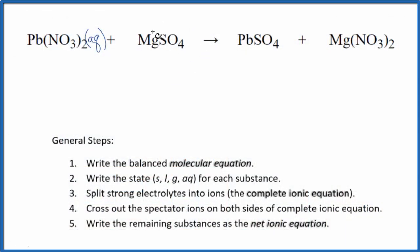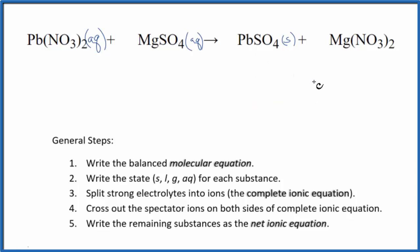Magnesium sulfate will be soluble — it's going to be aqueous, it'll dissolve. But the lead sulfate is not going to dissolve; it's going to be a solid. In fact, when these react, it'll be a precipitate — it'll fall to the bottom of the test tube. And nitrates are very soluble, so we'll put AQ there. So we have our states.